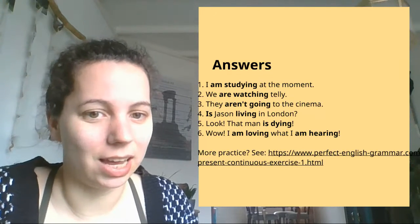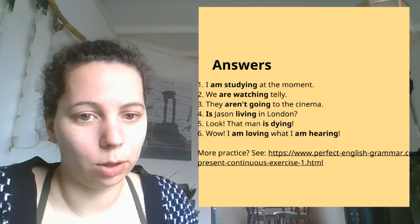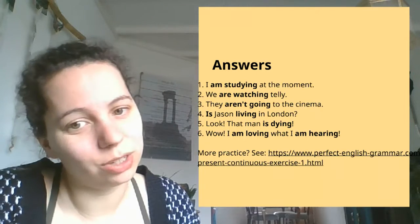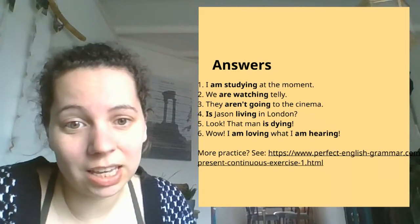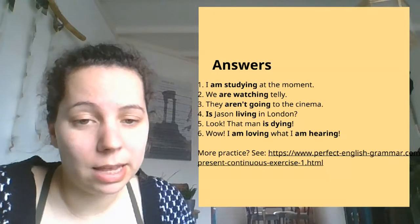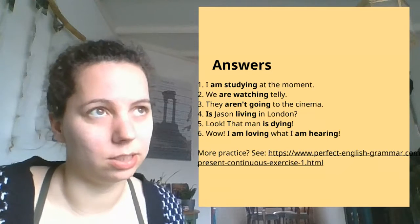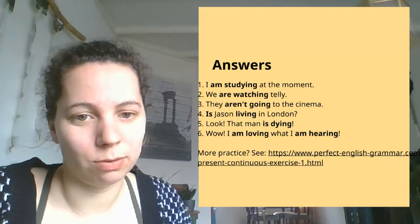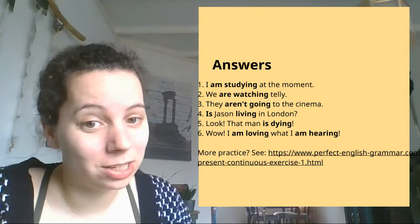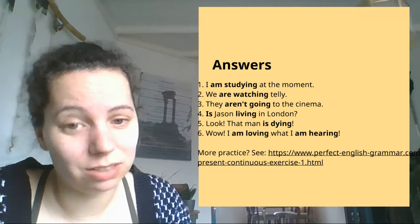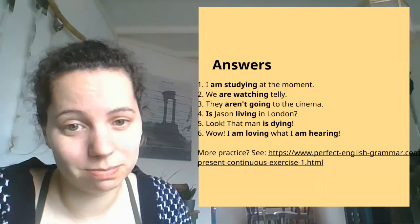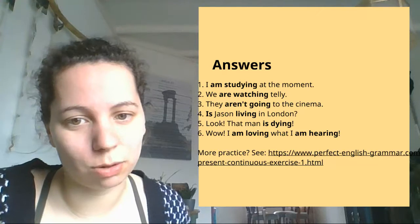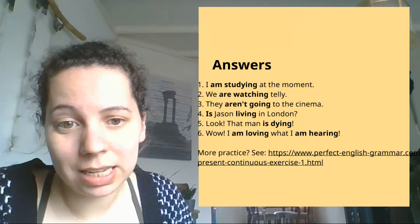In three, 'they' gets 'are' as well. 'Go' plus -ing is 'going' — nothing strange going on there. And we have to negate it, so it becomes 'are not going'. In four, Jason is a he, so he gets 'is'. 'Live' has a silent E at the end — it's 'live', not 'liver'. So if we add -ing, we drop the E and it becomes 'living' with V-ing. And it's a question, so 'is' is placed before Jason: 'Is Jason living in London?' In five, 'die' ends in -ie, so the -ing form gets Y-ing. That man is a he, so it is 'dying'.